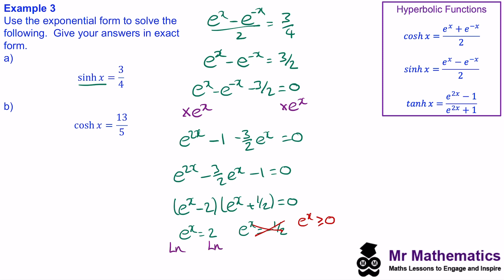To find x we take the natural log of both sides. The natural log and e cancel, so x = ln(2). Now try to work out cosh(x) = 13/5 using a similar method — you can pause the video and when you come back we'll go through the worked solution.